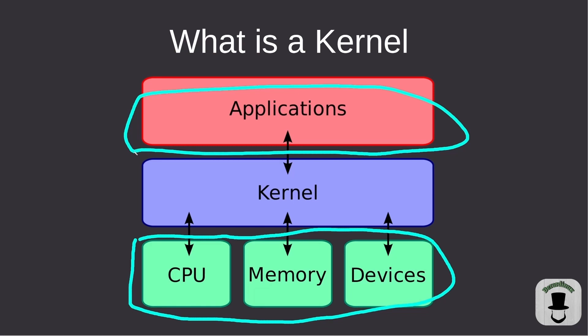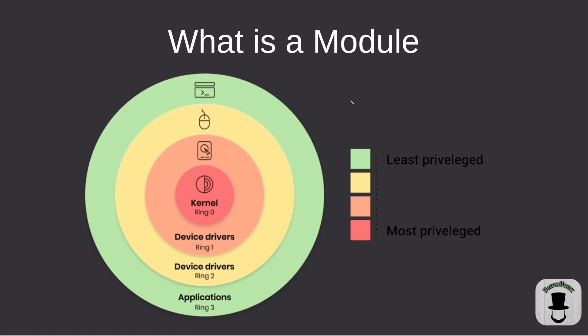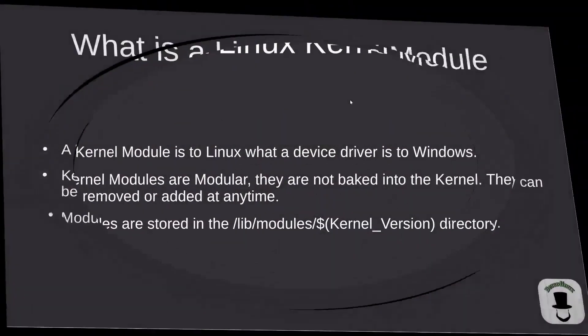Kernel modules are pretty much the same as Windows drivers. If you have a device that is not already baked into the Linux kernel, you can add or remove modules depending on your use case. For example, with Bluetooth devices, Windows needs drivers installed; with Linux you do this with modules. It's like a puzzle piece built out of the kernel — you can add functionality or remove it if something is malfunctioning.